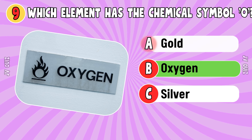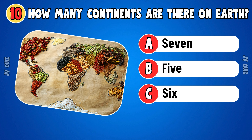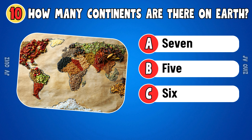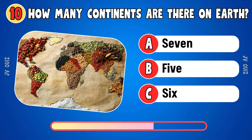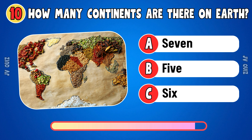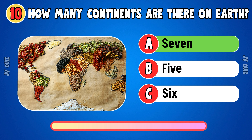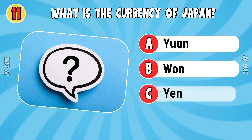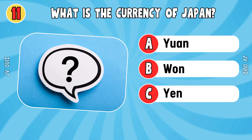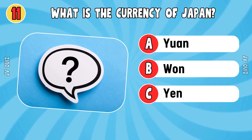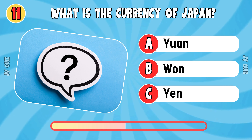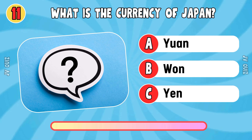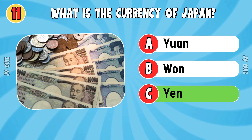How many continents are there on Earth? Seven. What is the currency of Japan? Yen.